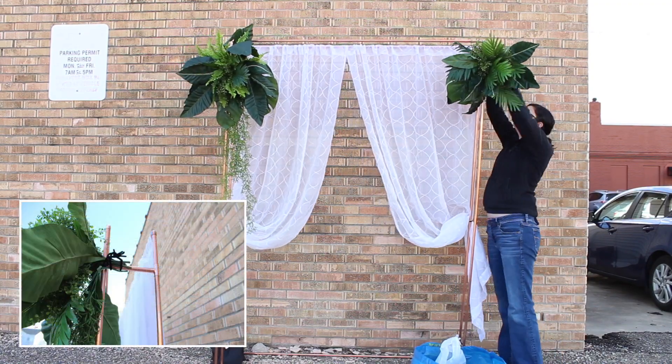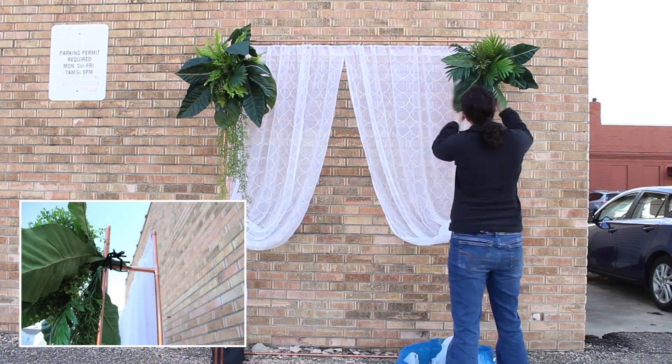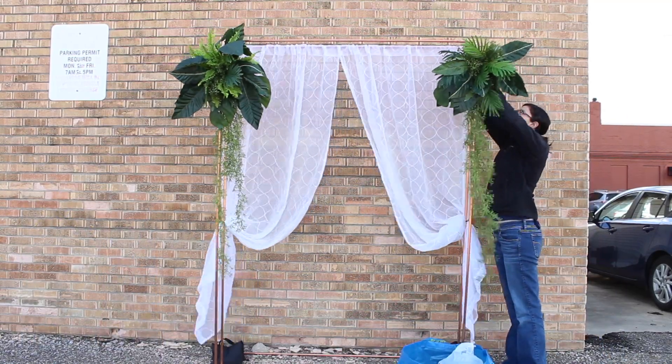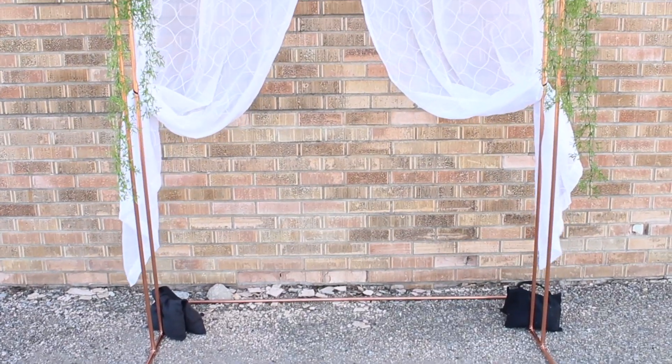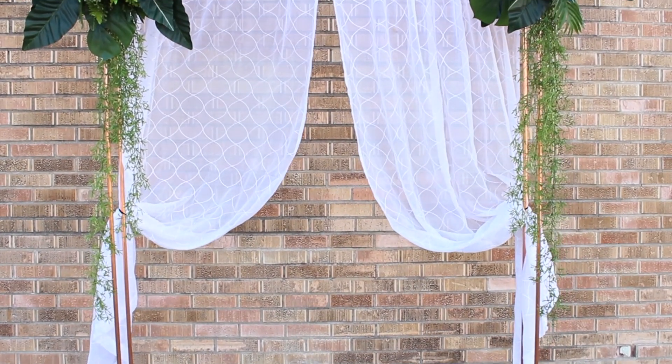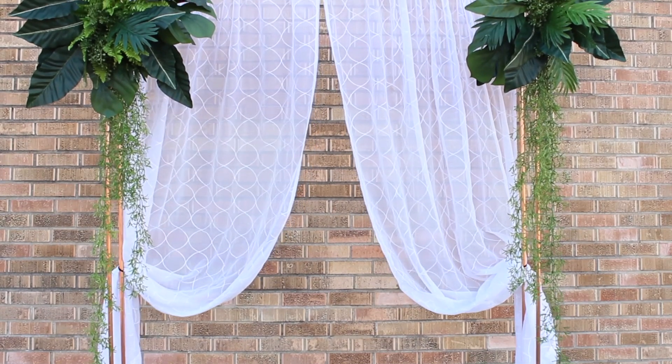I'm just adding these tropical arrangements using chenille stems to those horizontal six-inch pipes, which are super convenient for attaching florals to. And that's all there is to setting up this arch. It traveled really easily in the back of my hatchback car and went together super quick.